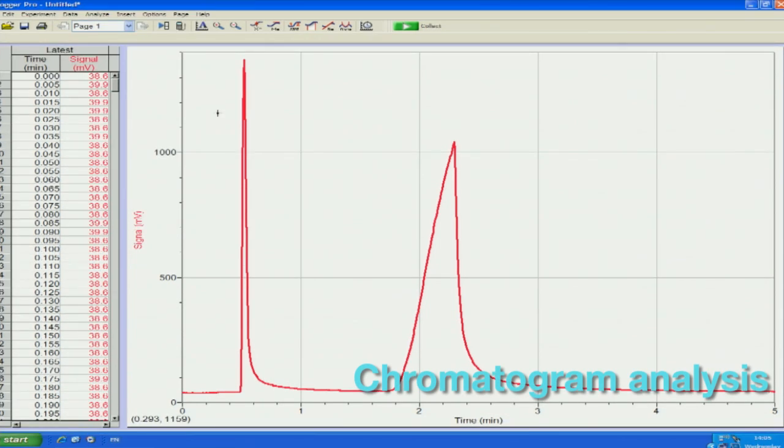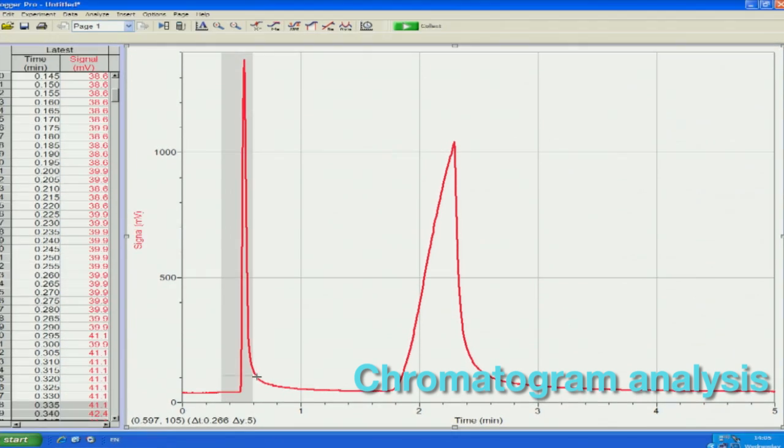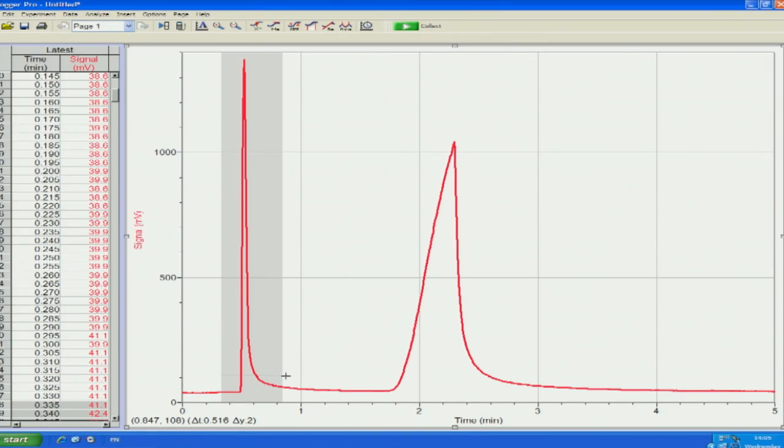The chromatogram is generated as a representation of signals plotted against time. As the compound exits the column, it arrives at the detector and we observe a peak. Each compound has a unique retention time under a given set of conditions. The time at which the maximum peak height is reached represents the retention time of the compound.